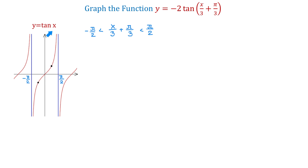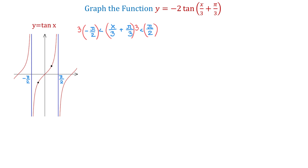Just like in the basic tangent function, x is between negative pi over 2 and positive pi over 2. From here we will solve this inequality for x. Because we have 3 in the denominator, we will start by multiplying all three sides by 3. On the left we will have negative 3 pi over 2. In the middle we distribute 3, and 3 and 3 cancel to give x plus pi. On the right side we will have 3 pi over 2.